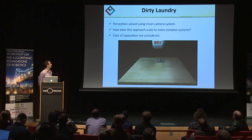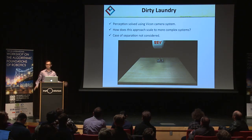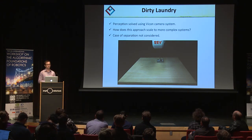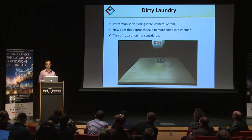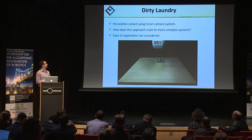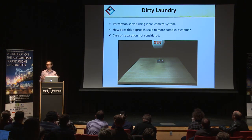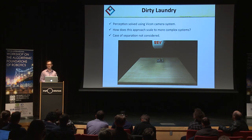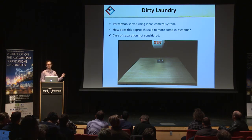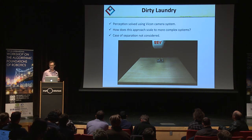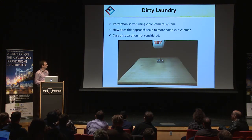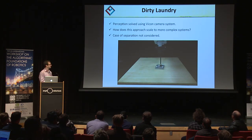Now for the dirty laundry. One key point is that we abstract ourselves from vision and assume that vision is solved — we use a Vicon camera system to track the pose of the object, as we wanted to focus on the control problem. Another question is how does the family of modes approach extend to more complex systems with multiple contact points and higher degrees of freedom — this is currently something we're looking into. Finally, the case of separation is not considered, so the controller works if you're always in contact. But if you give it too big a disturbance and contact is broken, then this controller cannot reason about that mode.